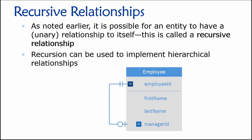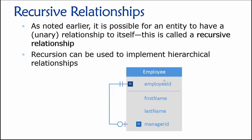Just to remind you, the idea with the recursive relationship is that we have a table that is related to itself. We called these conceptually unary relationships, in contrast to a binary relationship, which is a relationship between two tables. This is a relationship where it has a relationship to itself — that's recursive. One of the very cool things about recursion is that we can use it to represent hierarchies of any arbitrary degree of complexity.